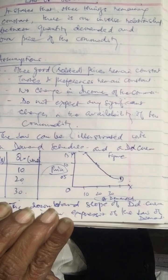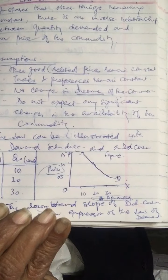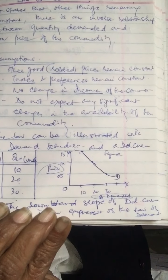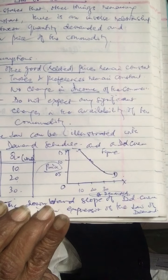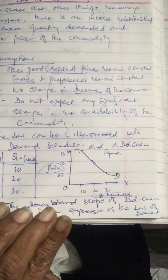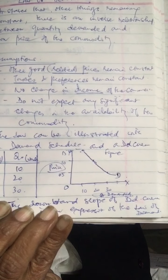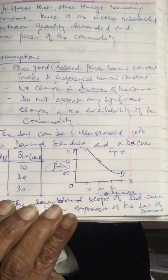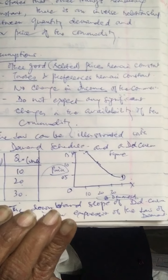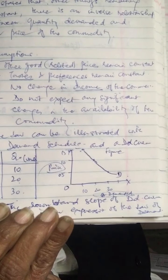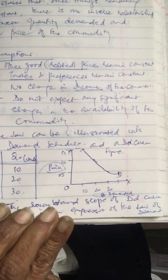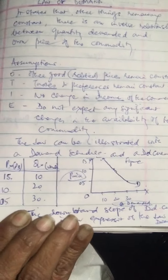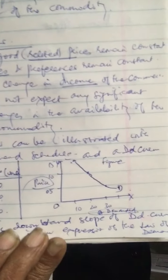When the price increases from 10 to 15, the units decrease from 20 to 10. We can see the expansion and contraction of demand here. We find that there is a downward slope of the demand curve, and that is itself the expression of the law of demand.